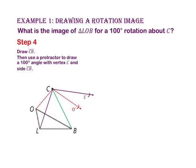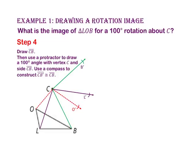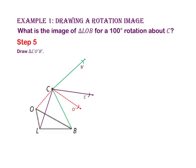For step 4, draw segment CB, then use a protractor to draw a 100 degree angle with vertex C and side CB. Again, use a compass to construct side CB prime that is congruent to side CB. For step 5, let's draw triangle L prime, O prime, B prime.